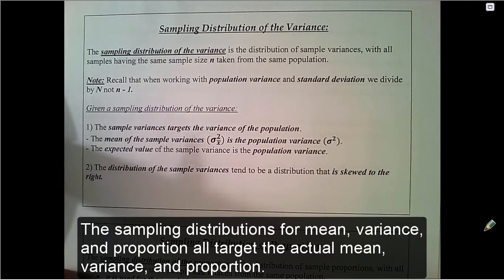The sampling distributions for mean, variance, and proportion all target the actual mean, variance, and proportion.